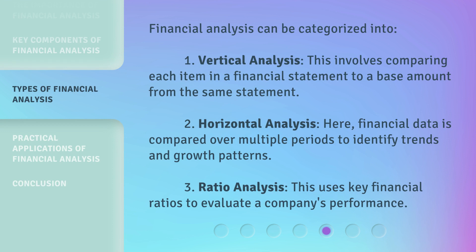Financial analysis can be categorized into: one, vertical analysis — comparing each item in a financial statement to a base amount from the same statement; two, horizontal analysis — comparing financial data over multiple periods to identify trends and growth patterns; three, ratio analysis — using key financial ratios to evaluate a company's performance.